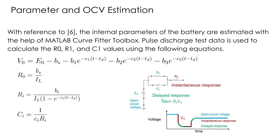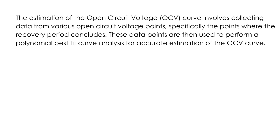In order to estimate the parameters R0, R1, and C1 of the equivalent circuit model, the sixth paper mentioned in the references slide has been used. As per their technique, a pulse discharge test has been carried out on the battery, and using the voltage versus time graph, the parameters R0, R1, and C1 are calculated. In order to estimate the open circuit voltage curve, the points corresponding to the conclusion of the recovery period are collected, and a polynomial fit using the MATLAB Curve Fitter toolbox has been used to generate the open circuit voltage curve.